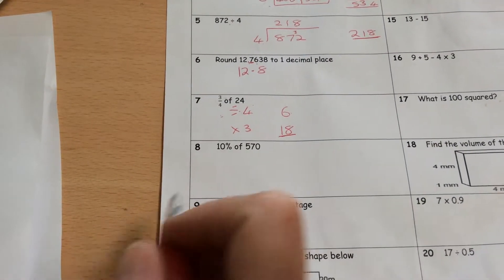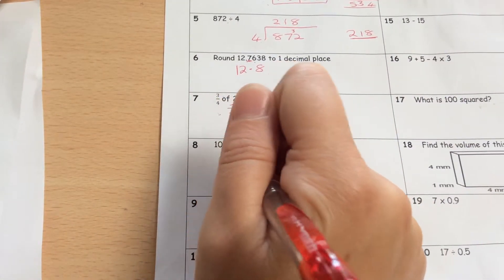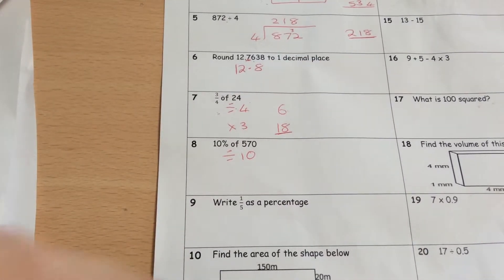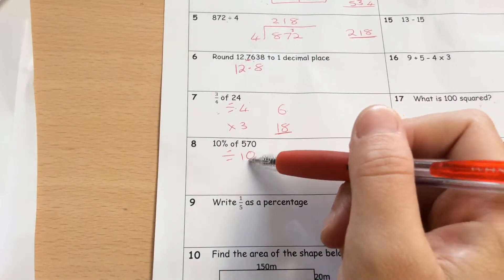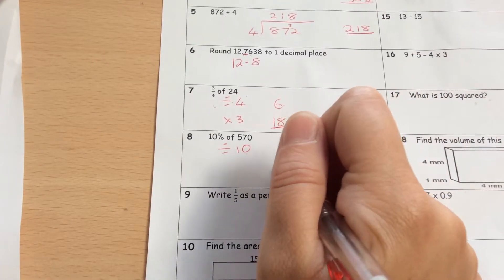10% of 570 can be found by dividing by 10. Dividing by 10, how many 10s go into 570? 57.